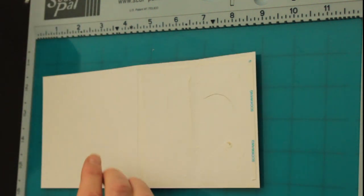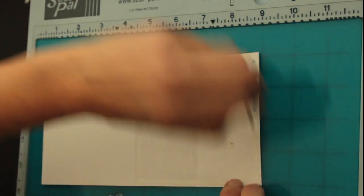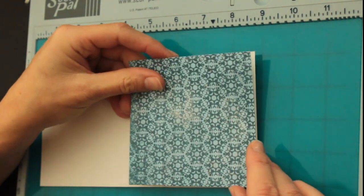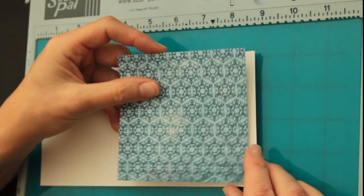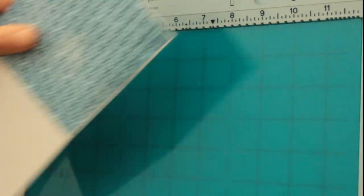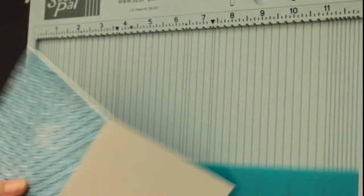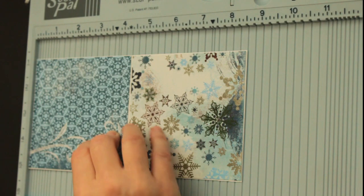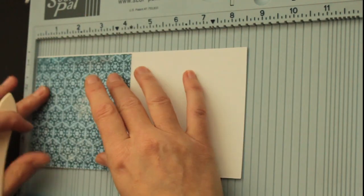But this is a lot easier than cutting through all three sides that I've shown in the photo tutorial on Splitcoast. Again, you can score it at two and an eighth to make sure it goes through that paper as well.